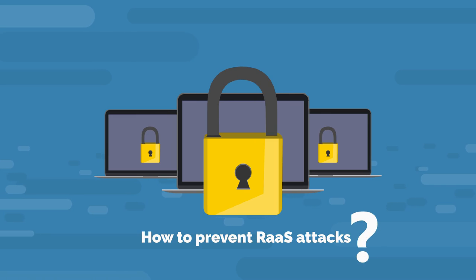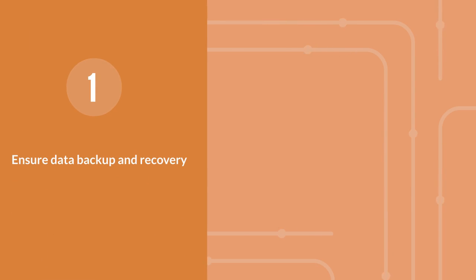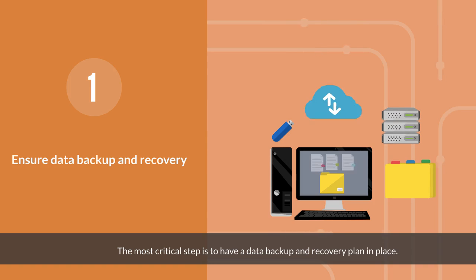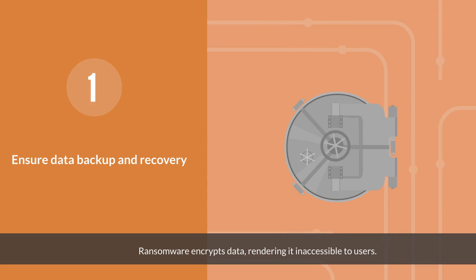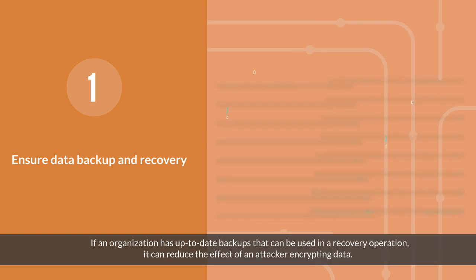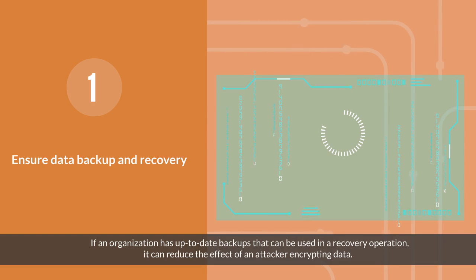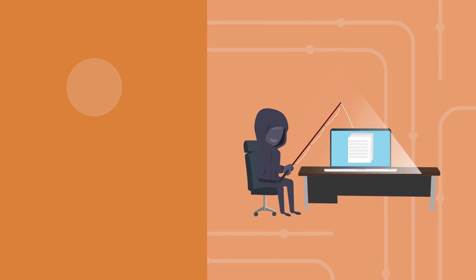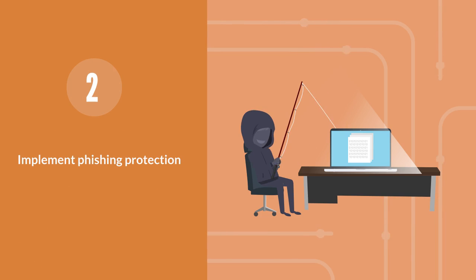How to prevent RaaS attacks. First, ensure data backup and recovery. The most critical step is to have a data backup and recovery plan in place. Ransomware encrypts data, rendering it inaccessible to users. If an organization has up-to-date backups that can be used in a recovery operation, it can significantly reduce the effect of an attacker encrypting data.